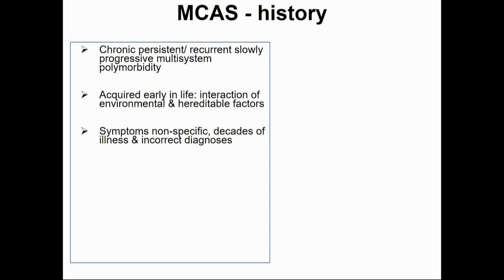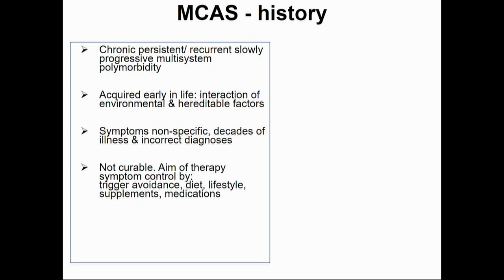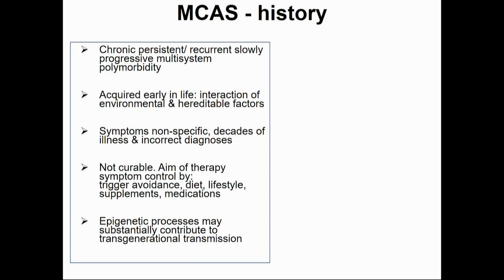It's really important that identifiable underlying conditions are looked for, such as doing serum cortisol and other tests that will exclude other conditions. Often by the time patients come to me, all of those tests have been done. There is an epigenetic process that may substantially contribute to transgenerational transmission. Often patients say that their relatives have one or more aspects of a triad of either hypermobility EDS, POTS, or MCAS.